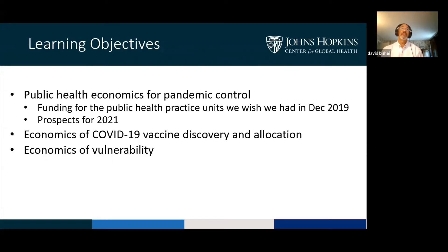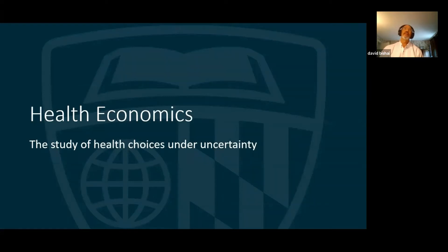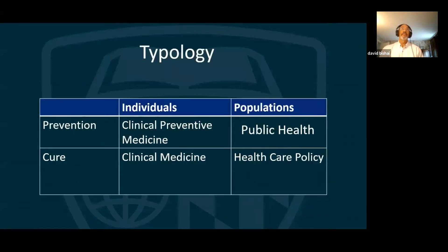We'll be covering definitions of economics and public health economics, then applying public health economics to two specific questions: the economics of the COVID-19 vaccine, and the economics of vulnerable groups affected by both COVID-19 and the social distancing measures that have destroyed their livelihoods. Economics is not the study of money — it's the study of choices. We examine how human beings make choices, especially when they don't know everything about the consequences of those choices. When we apply economics to health, we study how people make decisions about their health and the healthcare system when they don't know everything.